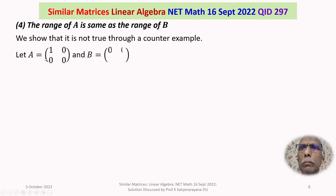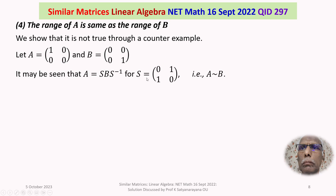Take A to be the 2×2 matrix with first row [1, 0] and second row [0, 0], and B to be the 2×2 matrix with first row [0, 0] and second row [0, 1]. These are square matrices with real entries. We claim A is similar to B, because we can find S = [[0,1],[1,0]], an invertible 2×2 matrix, such that S B S⁻¹ = A. By definition, A is similar to B.